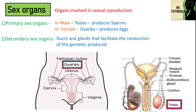Males and females can be externally differentiated by certain specific features called secondary sexual characters. They are called sexual dimorphic characters. In males, presence of beard, mustache, hair on the chest, muscular body, and enlarged larynx — also called Adam's apple — are secondary sexual characters.